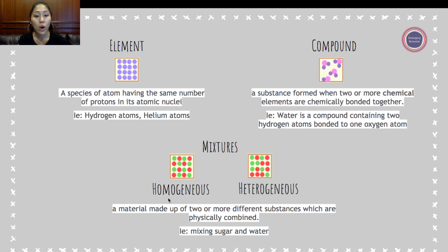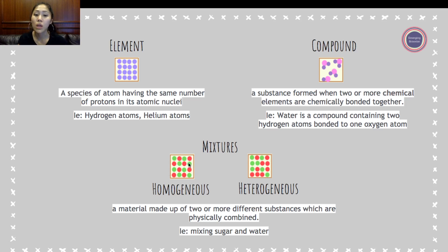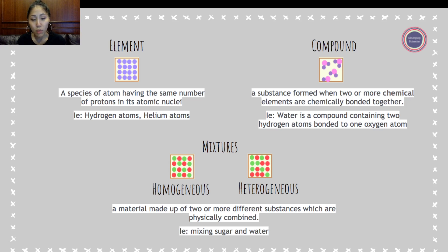The differences between these two types come down to the prefixes homo and hetero. The prefix homo means same, and the prefix hetero means different. In a homogeneous mixture, the microscopic view looks like the mixture is fairly uniform — the substances are mixed evenly — whereas in a heterogeneous mixture, the substances are not mixed as evenly.